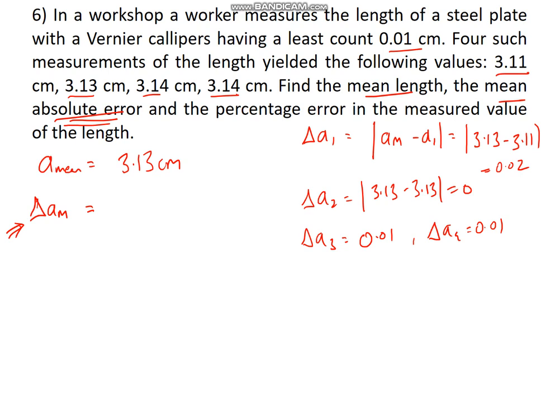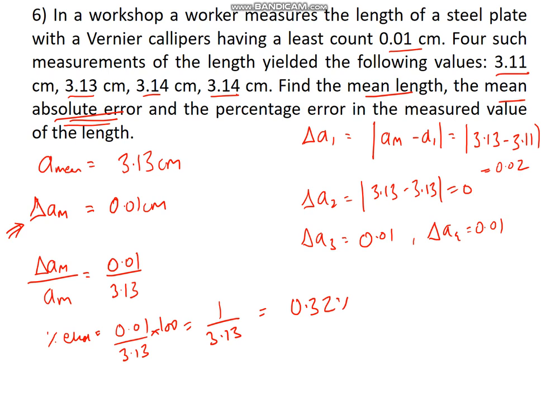So we got mean absolute error, which is 0.01 centimeter. For percentage error, we'll find out the relative error first: mean absolute error divided by the arithmetic mean. This will give us the relative error. When you multiply this by 100, this will give you percentage error. So percentage error will be this thing multiplied by 100. We got 0.01 upon 3.13. When you solve this, you will get around 0.32 percent. This is the answer; you can verify this. Let us go ahead with the next question.